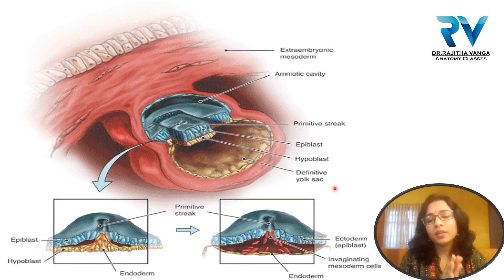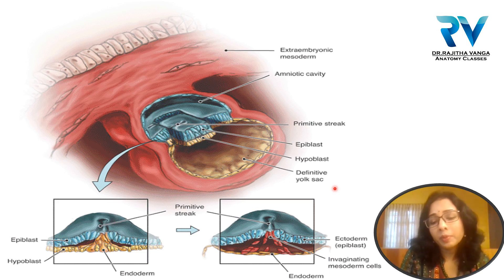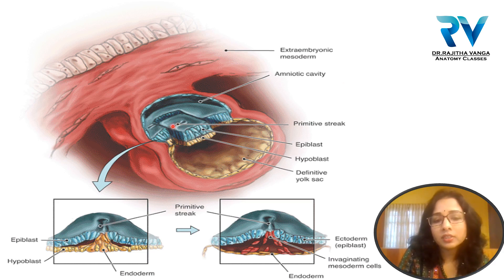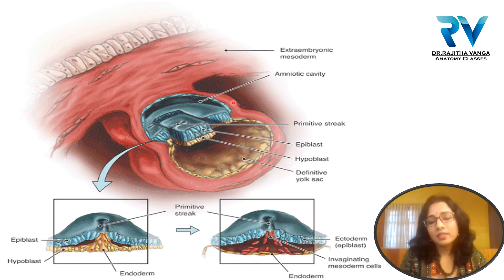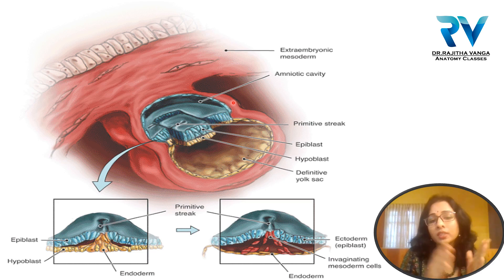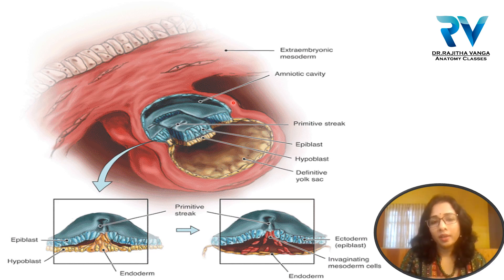Due to continuous cell division, the cells formed migrate towards the cranial or head end of the embryo. The primitive streak appears on the caudal side of the embryo, while the other end is the cranial or head end. As cells divide and grow towards the head end, the disc-shaped embryo turns to form a pear-shaped embryo.